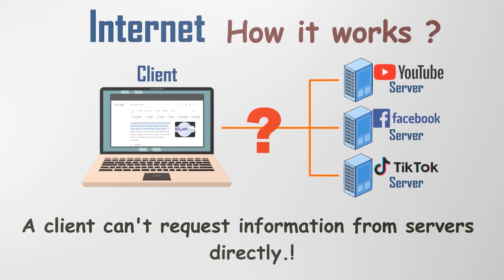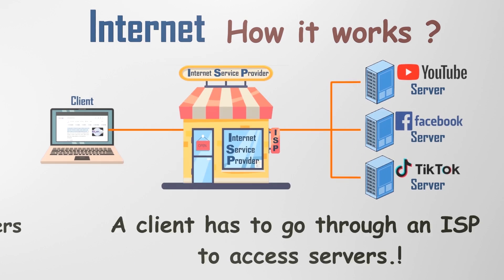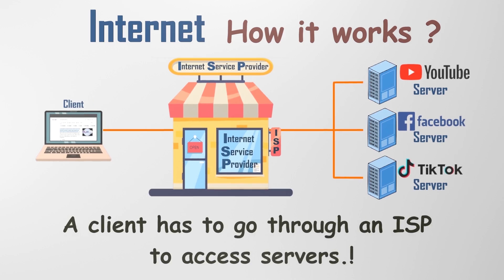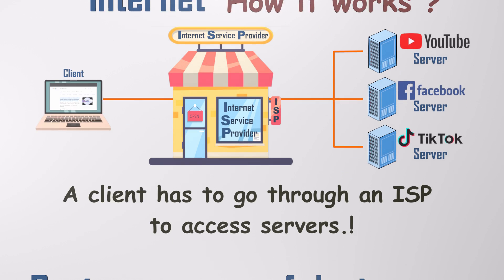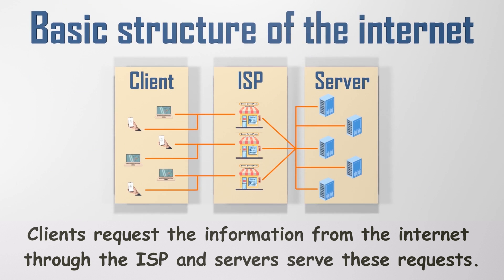How can a client like us gain access to the Internet? Even though there are servers out there, we can't request information from them on our own. To do that, we have to contact an Internet Service Provider company, or ISP, and request an Internet connection. For their services, customers have to pay the ISP a nominal fee, which varies according to the amount of data they use or the data plan they purchase. Then we can access the Internet through the ISP.